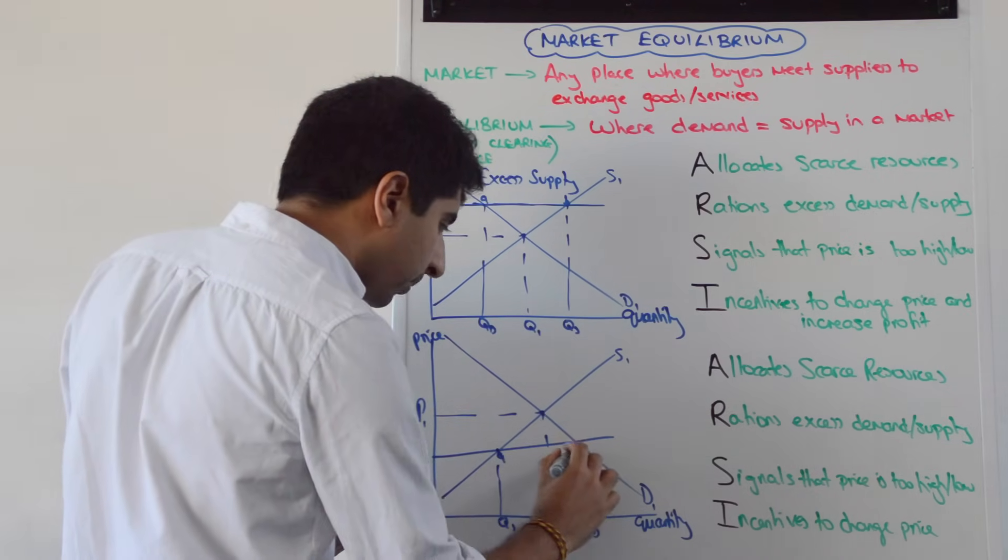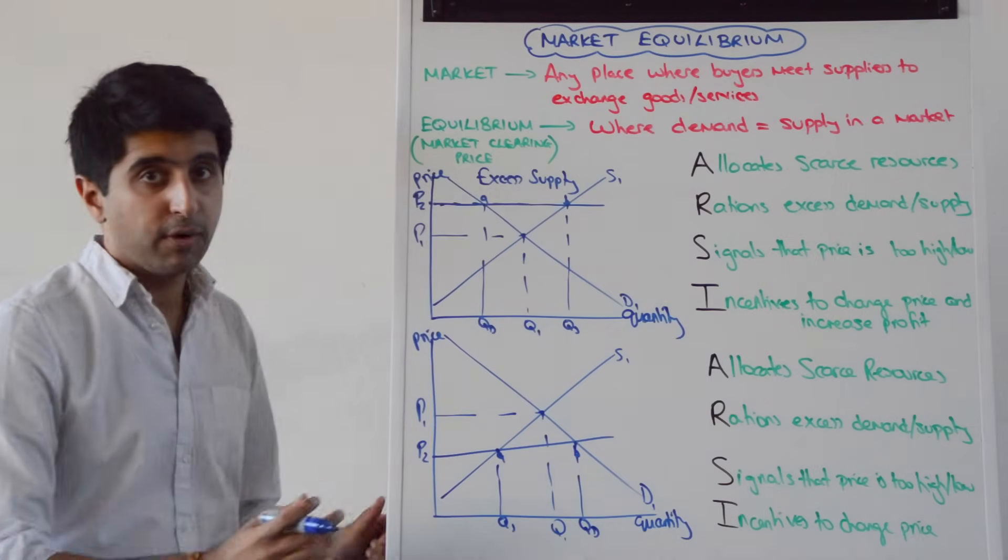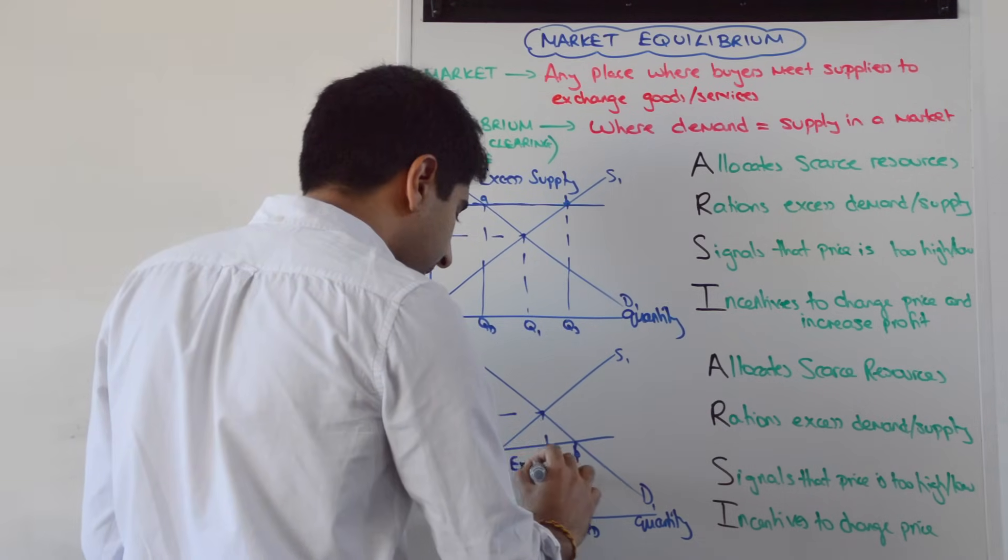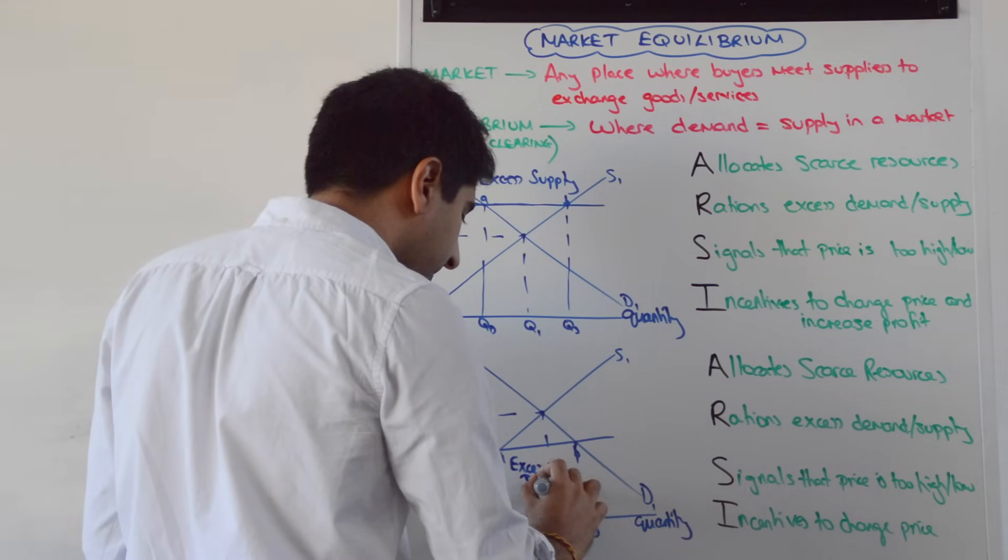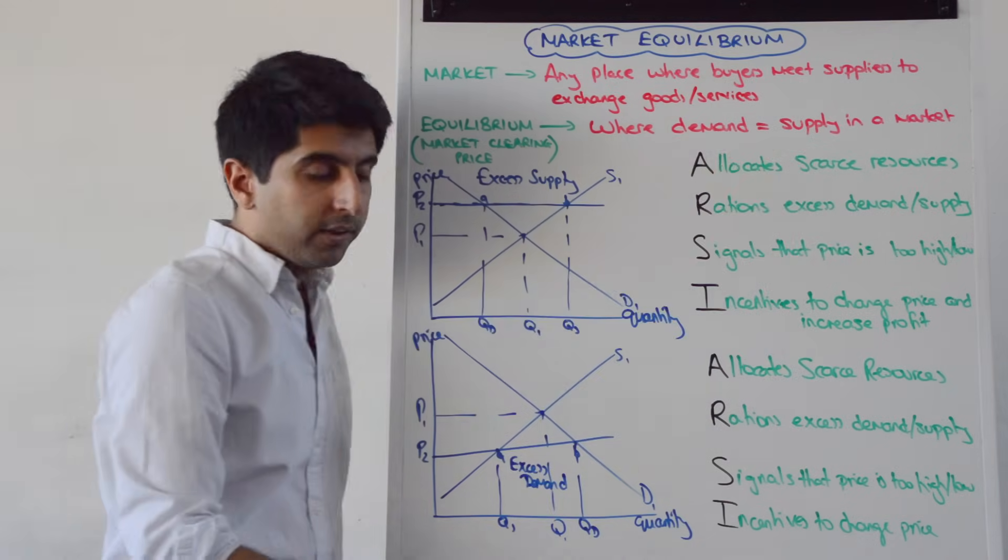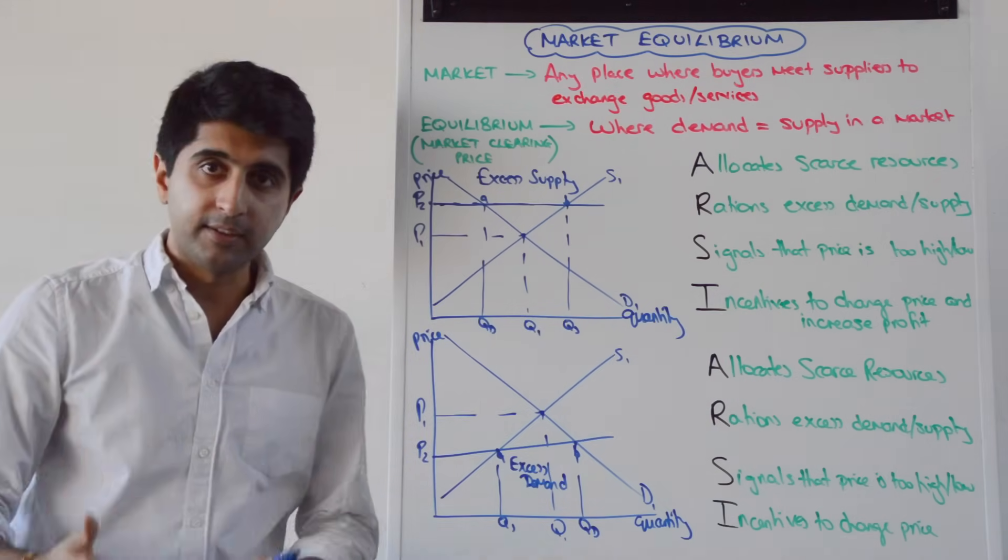So again, we have a problem here. This time demand is much greater than supply. We call that excess demand. Now this is clearly disequilibrium because demand is greater than supply. The two are not equal. This is disequilibrium too.